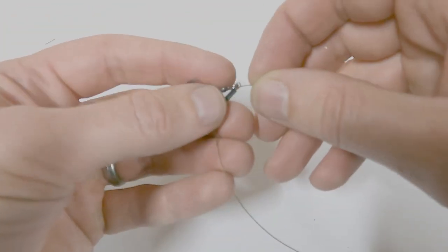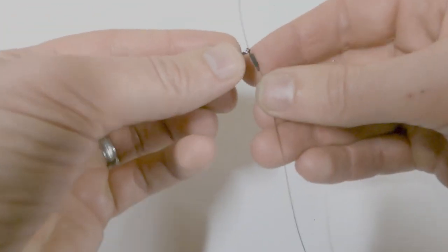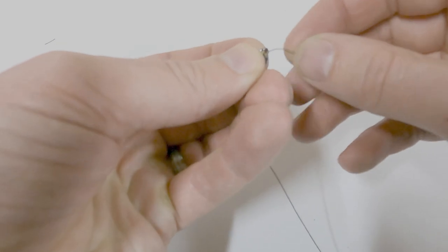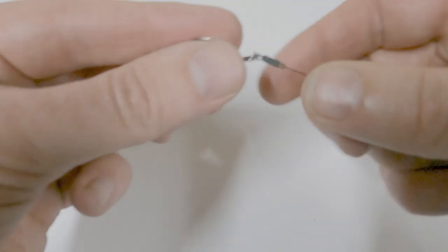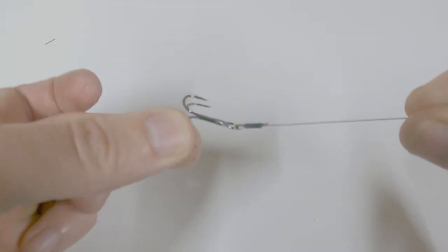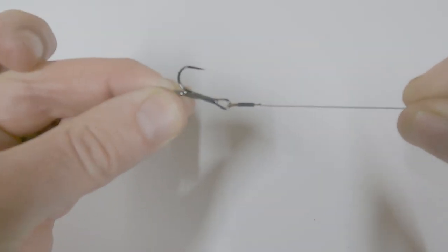And trim this tag end. You can go as tight as you like on there and trim it down. Like that. That's your first part done. That's nice and strong that.